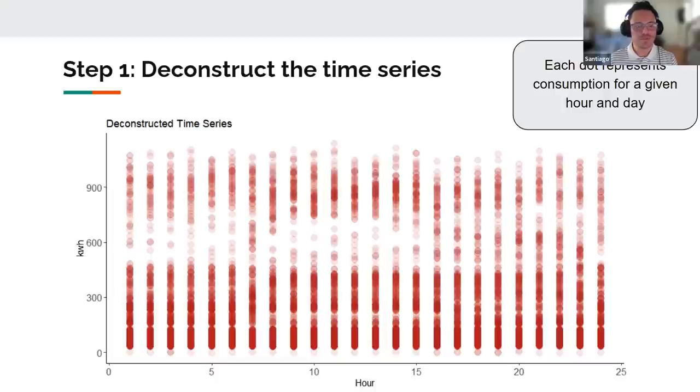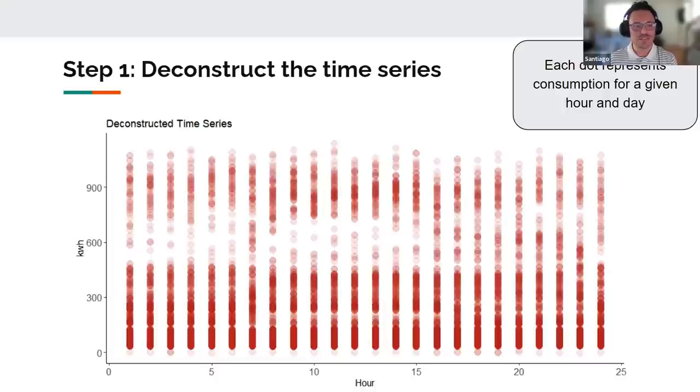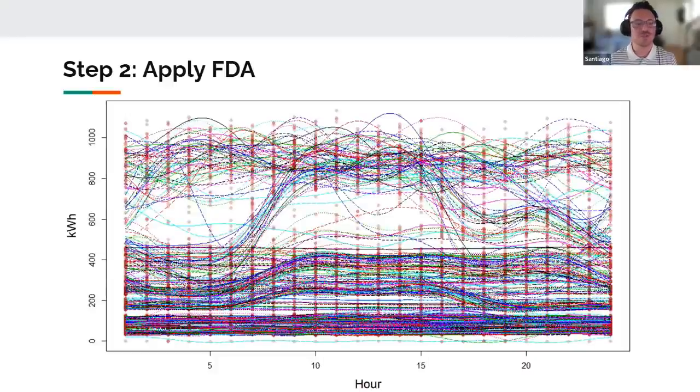That's step one. We're going to decompose that time series. And what you're looking at here is two years worth of meter reads. On the x-axis, you have your day, your 24 hours of the day, and your measure of consumption on the y-axis. Each dot represents a meter read for a particular day and hour. So you have about 700 days plotted here. Okay. Step one. Step two, we're going to apply functional data analysis.